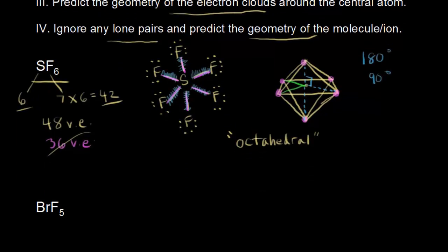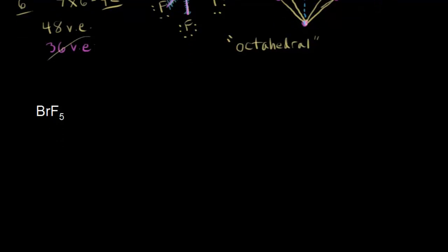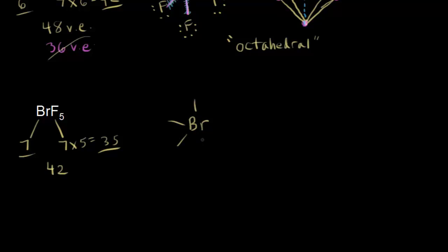Now let's do bromine pentafluoride, BrF₅. Bromine has 7 valence electrons — it's in group 7. Fluorine is also in group 7 and I have 5 fluorines, so 7 times 5 gives me 35. 35 plus 7 gives me 42 valence electrons. Bromine goes in the center, bonded to 5 fluorines. We have represented 2, 4, 6, 8, and 10 valence electrons so far.